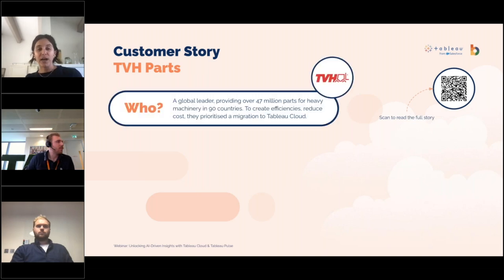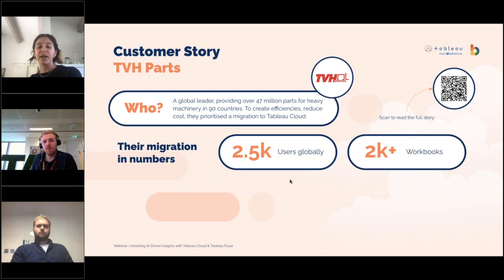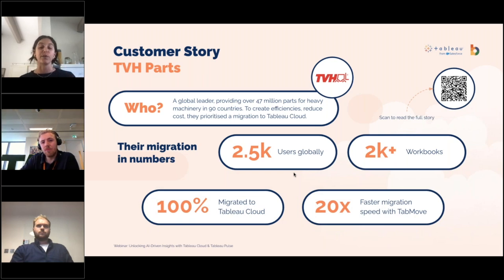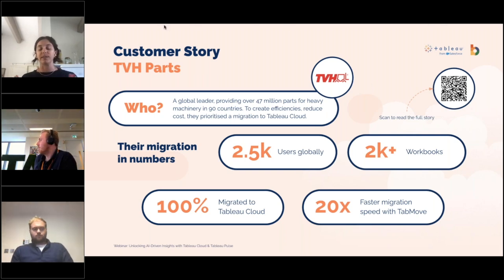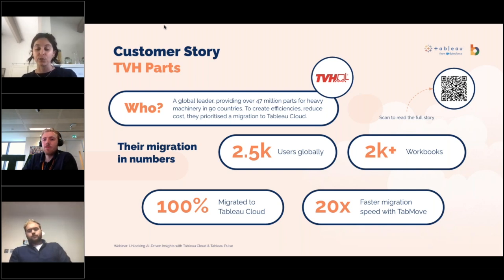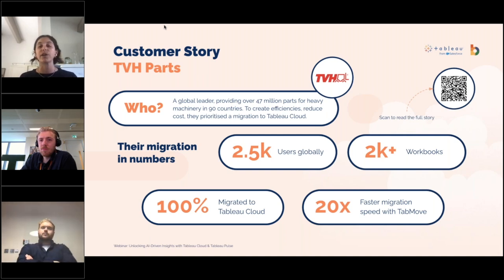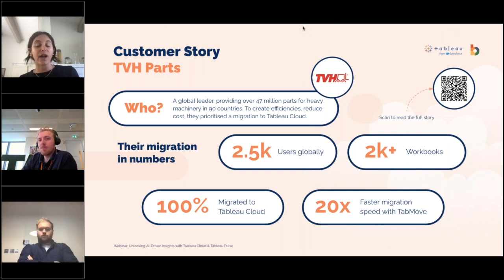The second customer story is TVH Parts — this came from BizTree's Belgian team. The numbers speak for themselves: over 2,000 users and over 2,000 workbooks moved to the cloud from server, 100% migrated, at 20 times faster rate. Had TVH done this manually, they would have faced the risk of human error and it would have taken approximately a year. TabMove allowed them to save time and resource costs and start using Tableau Cloud's capabilities much faster. There is a QR code available with more details and customer feedback.